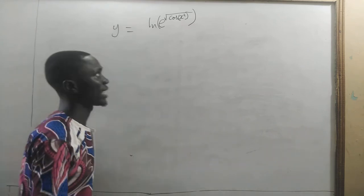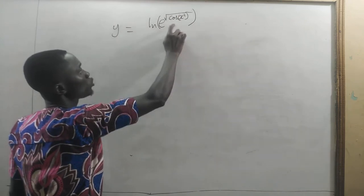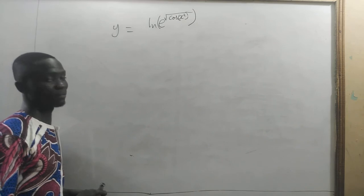In this lesson, we are going to look at the derivative of y equals ln of log e to the power square root of cosine x squared. How do we differentiate this? Very simple.